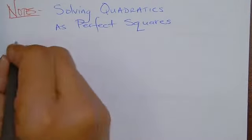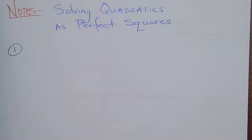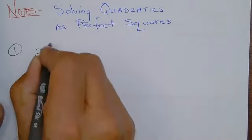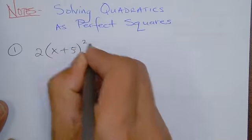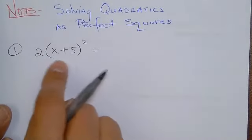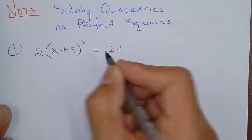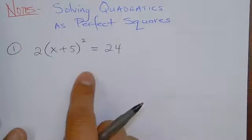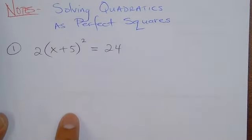So number one: let's say you're doing a problem and you're solving it by completing the square, and eventually you're going to get it down to something like this — especially the ones where you factor out a number in the front. Let's say you're solving a problem and you get it down to this point where you've already completed the square; it's a perfect square. Tell me, how would you proceed here? How would you finish this problem up?